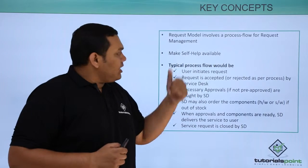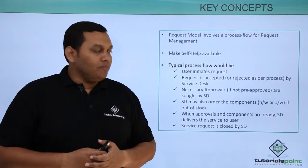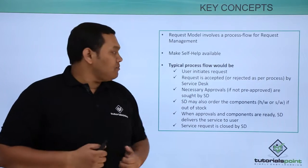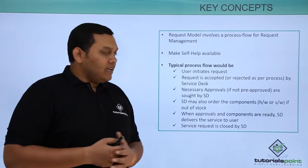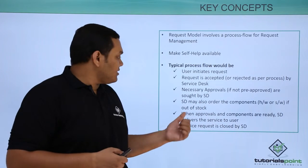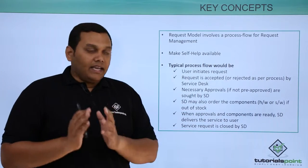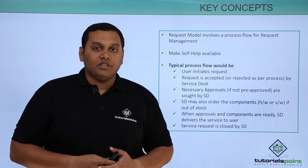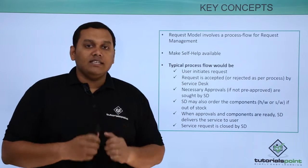The typical process flow of a service request: the user initiates the request, which is accepted by the service desk. Necessary approvals, if not pre-approved, are taken by the service desk. The service desk may also order components like hardware and software when required. When approvals and components are ready, the service desk delivers the service to the user and closes the service request. The service desk plays a very important role in this process, but the request is not considered an incident.